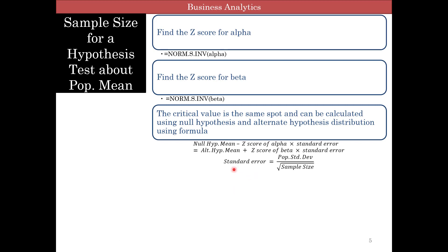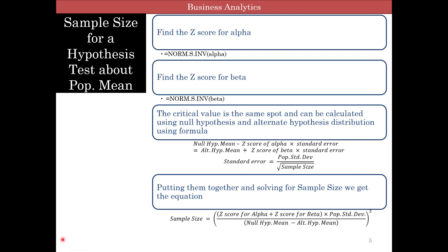The formula for critical value from alpha uses minus the z-score times standard error. From the alternate hypothesis distribution, it's this formula. They're both equal. The standard error is given by this formula. If you plug in both equations, the sample size equals z-score for alpha plus z-score for beta multiplied by population standard deviation, divided by the difference between the null hypothesis mean and alternate hypothesis mean, then square the whole thing.